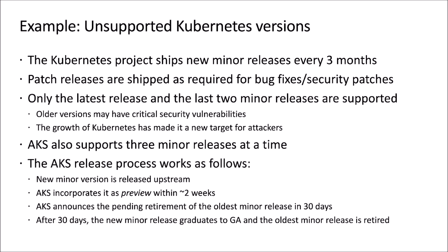In the upstream project, only the latest release and the last two minor releases are supported. So at any given time, you have roughly the last nine months of releases being supported. If you're running a version older than that, you may be running one that has critical security vulnerabilities, and certainly potentially performance issues and other bugs. Security vulnerabilities are obviously the most important concern.